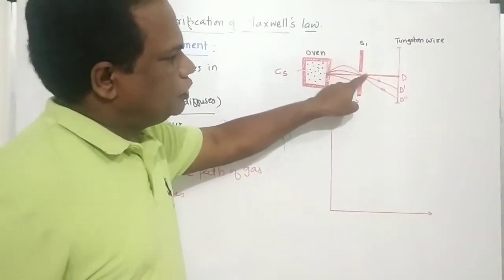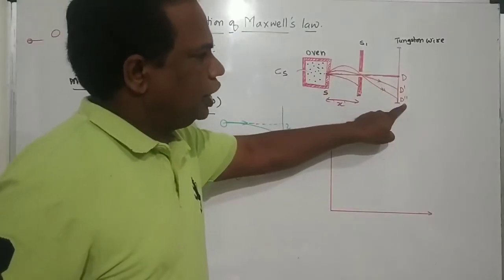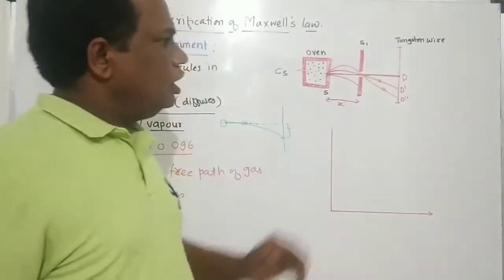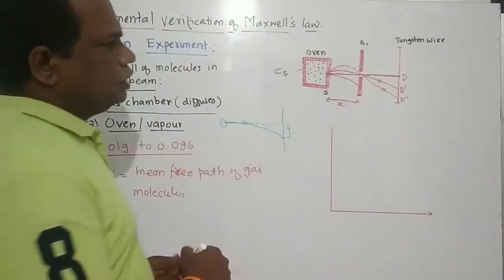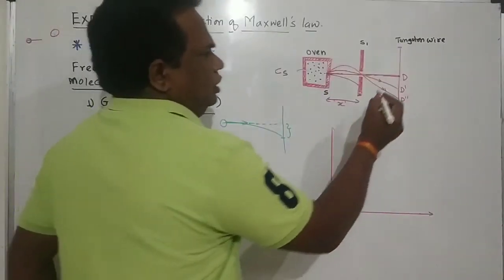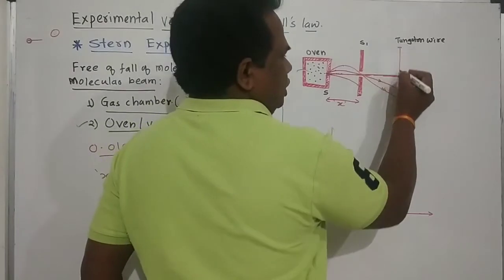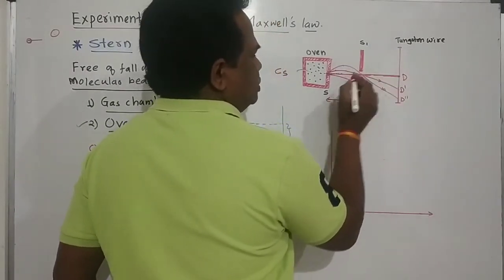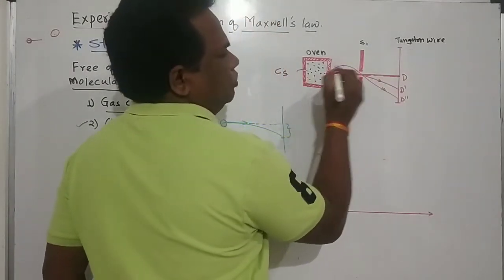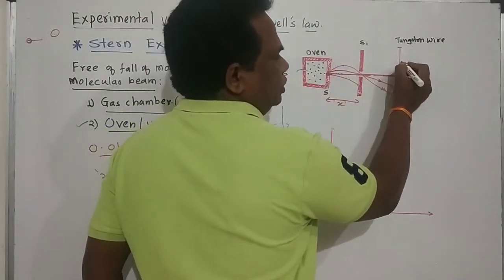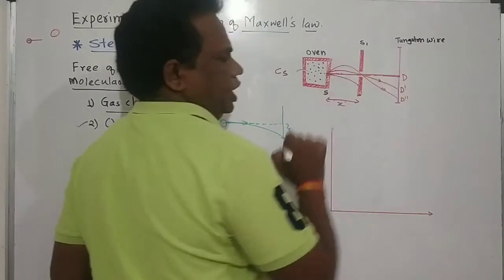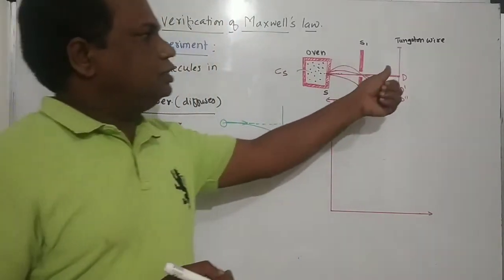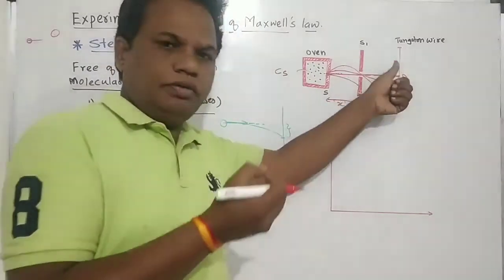These molecules pass through the slit and fall on the tungsten wire at point D direction. Any molecule that travels under gravity falls along a curved path onto the tungsten wire.